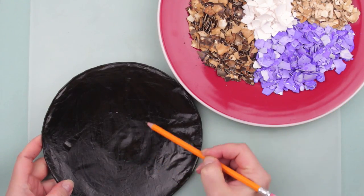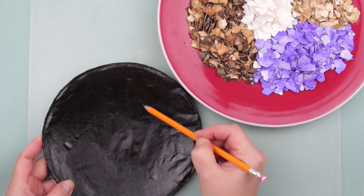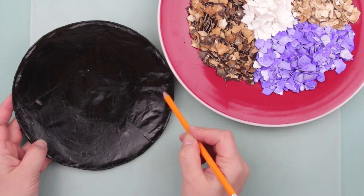Sketch a mosaic outline on the plate. We'll make a colored spiral.